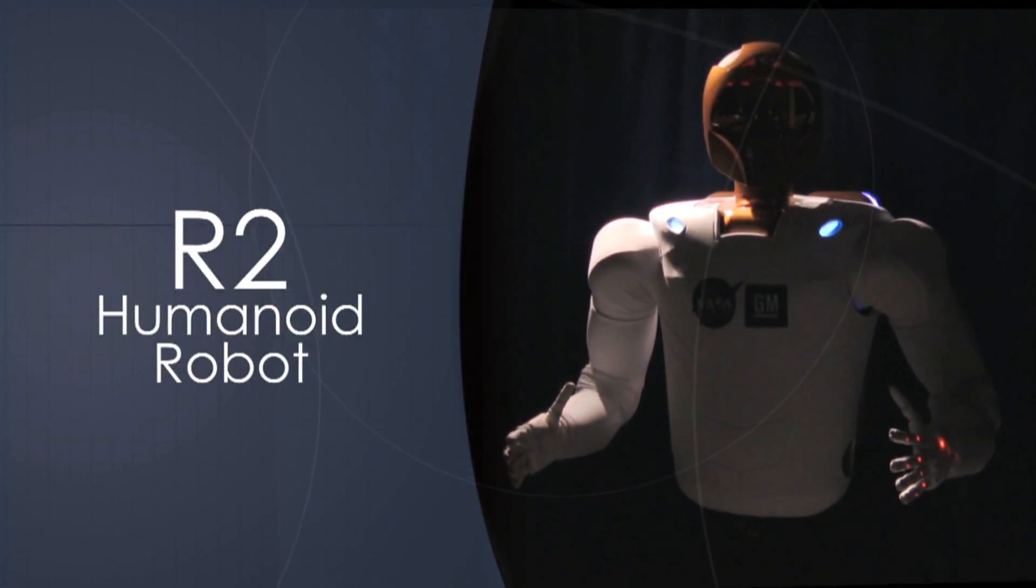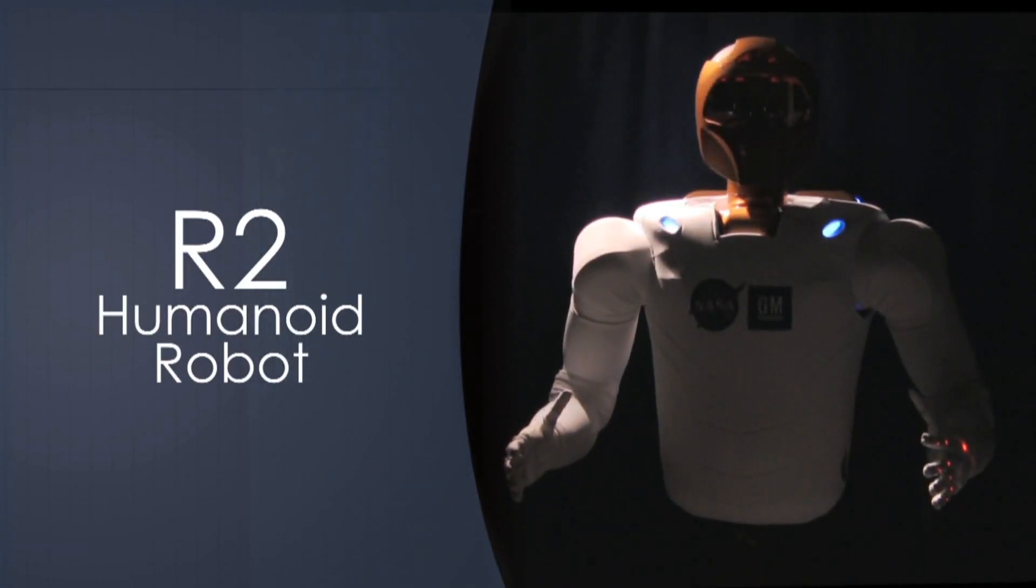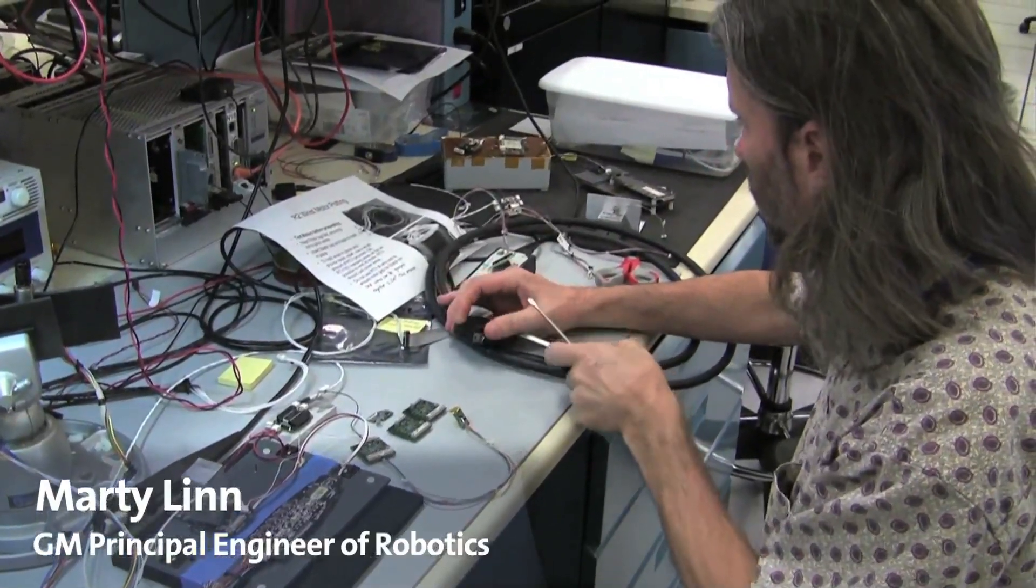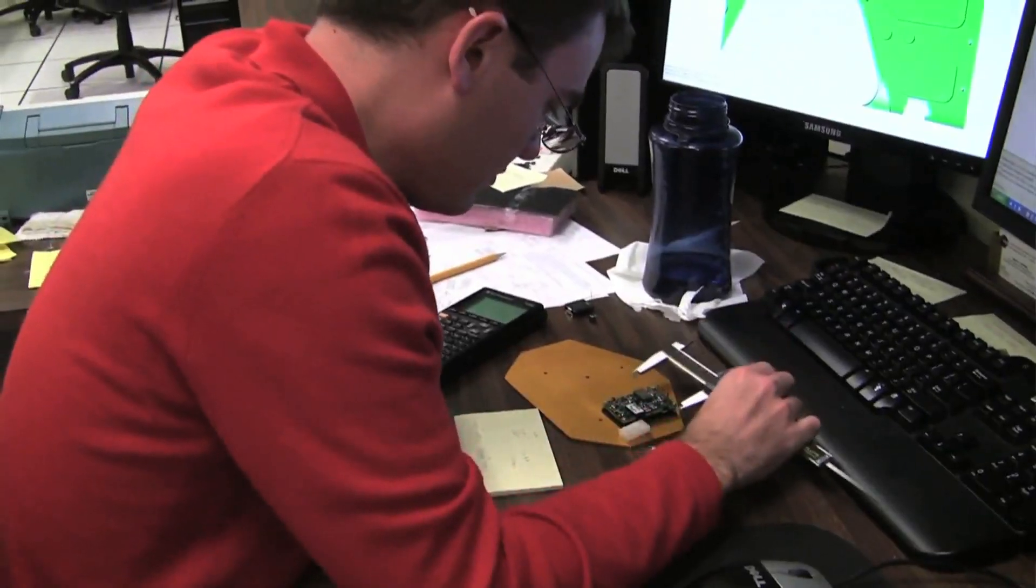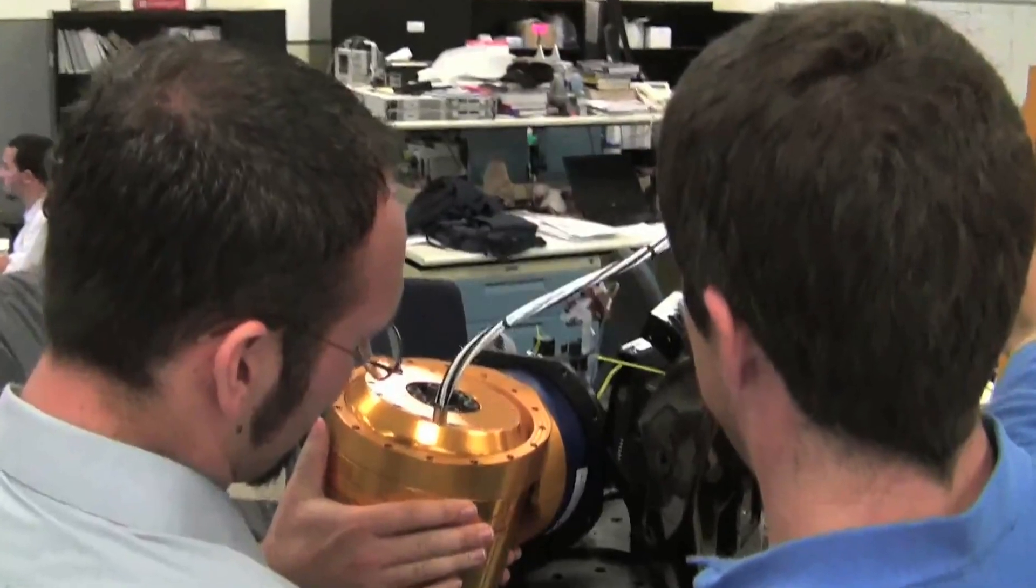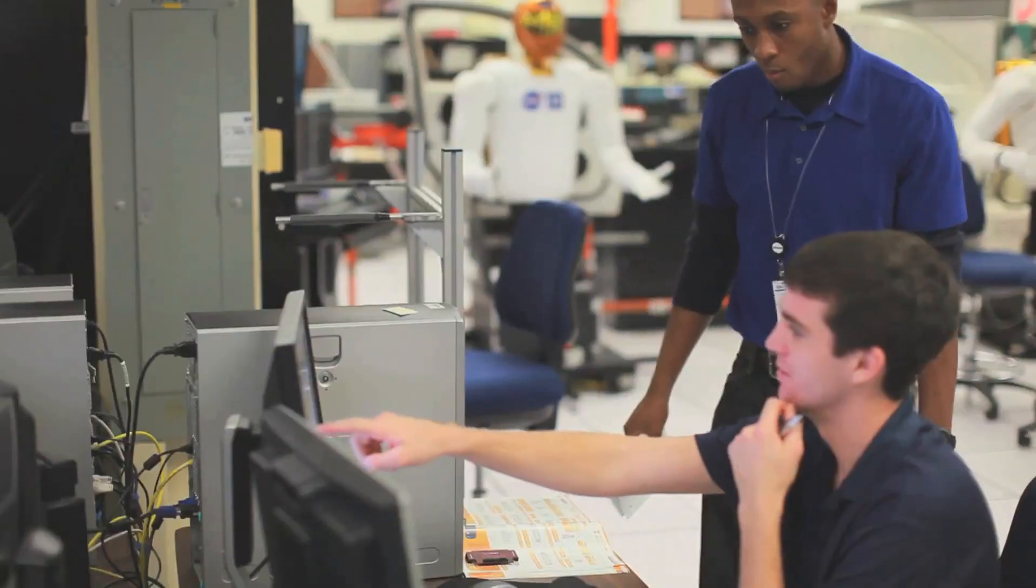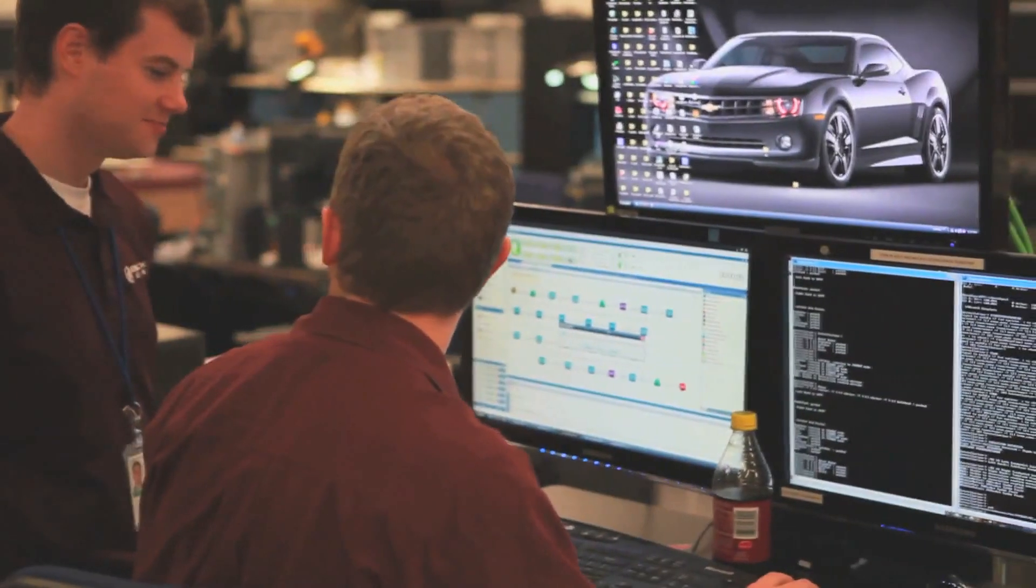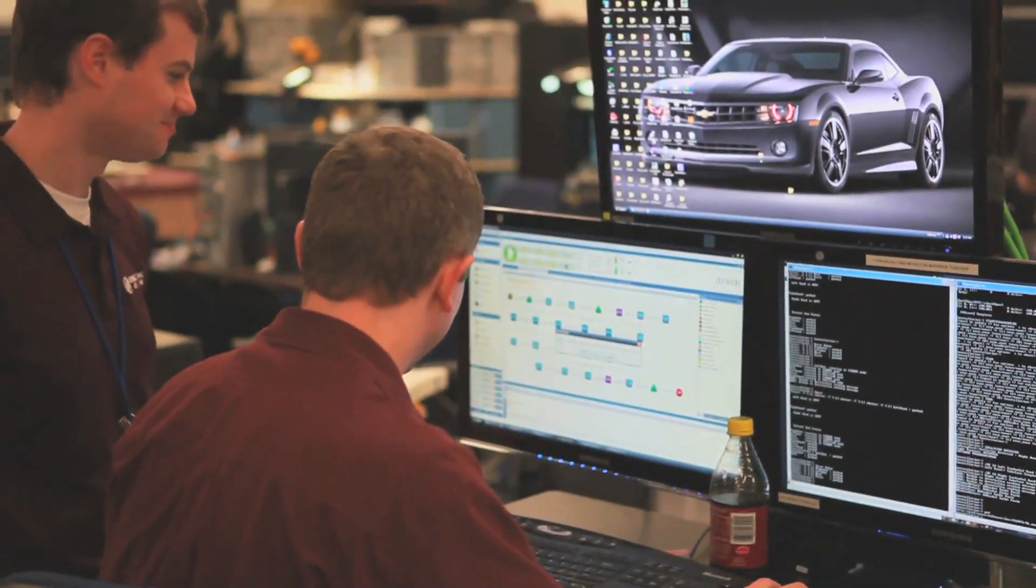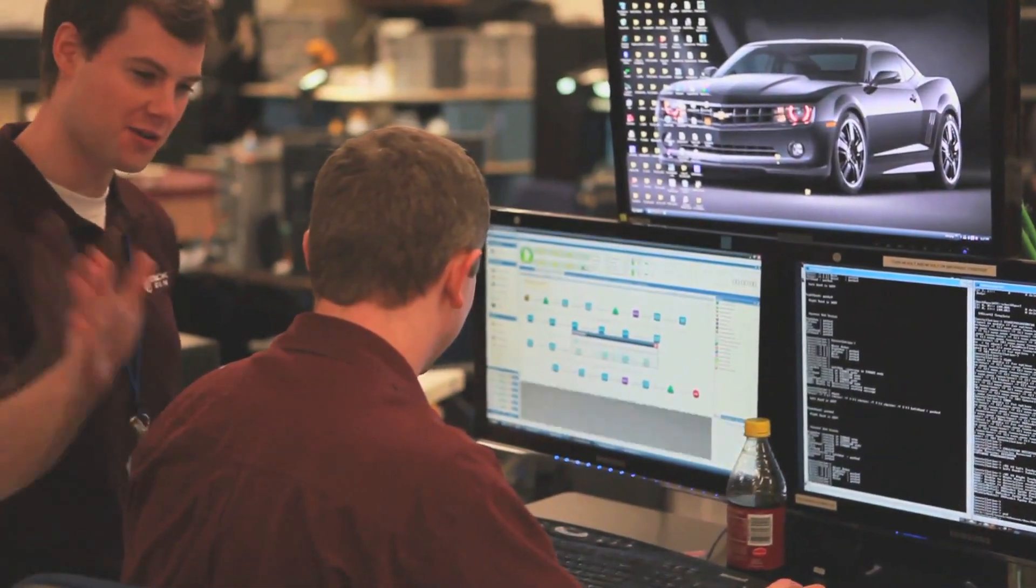The current Robonaut was developed as a result of a partnership between NASA Johnson Space Center and General Motors. General Motors sent down a team of engineers to work side by side with NASA engineers developing, assembling, designing, and building the current model of Robonaut R2.